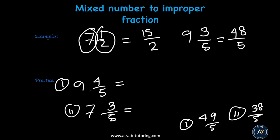Remember what you need to do: multiply the whole number by the denominator, then add the numerator. You can write a couple more problems by yourself and try. That's how to make from a mixed number to an improper fraction.